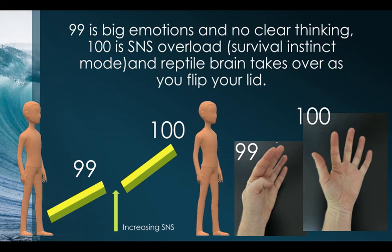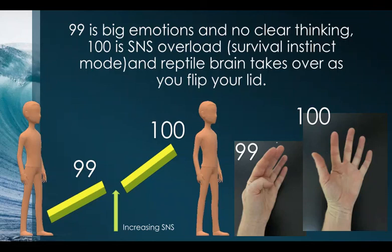At ninety-nine, you have big emotions — your amygdala, the emotional part of your brain, is visible as the thinking cap lifts. The thinking cap is no longer covering the amygdala, but it's still in contact with the base of the brain, so you're still in some control. However, as it goes to a hundred, the amygdala opens out and the thinking cap and amygdala are no longer attached — the reptile brain and survival instinct take over, and you flip your lid.